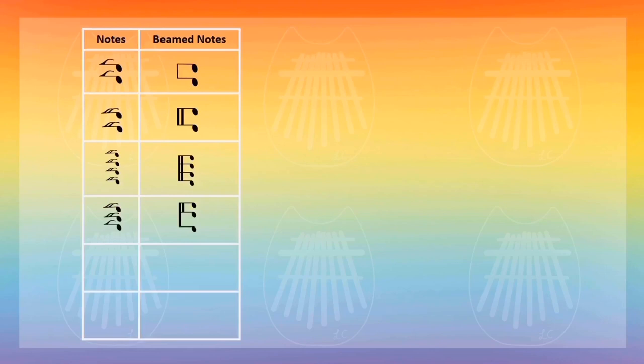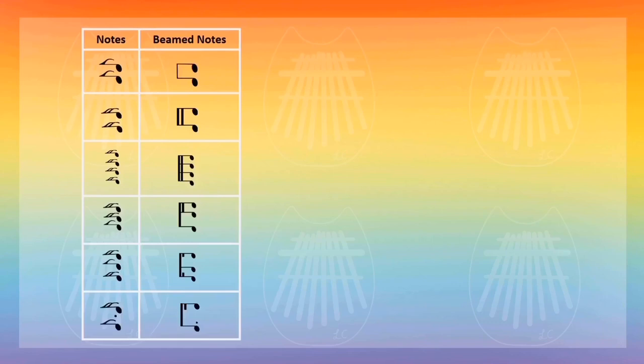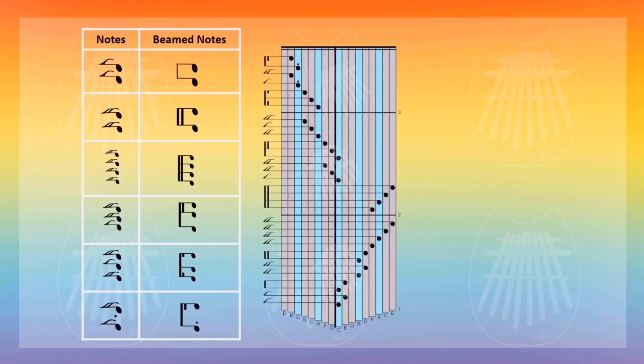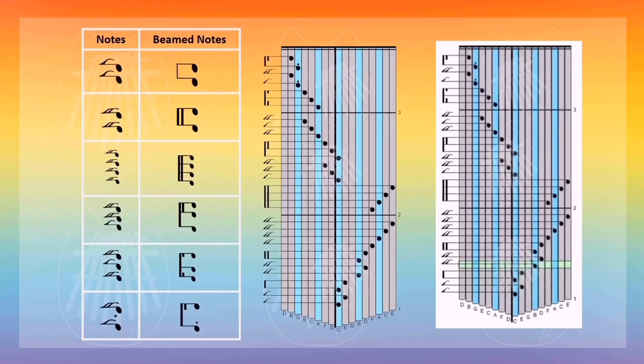This is what four sixteenth notes look like beamed together. This one is one eighth note and two sixteenth notes. For the eighth note you connect with one line, but when you get to the sixteenth notes you connect with two lines. This one is a sixteenth note, an eighth note, and a sixteenth note. This one is a dotted eighth note and then a sixteenth note. This is how they would look like without beaming and with beaming.